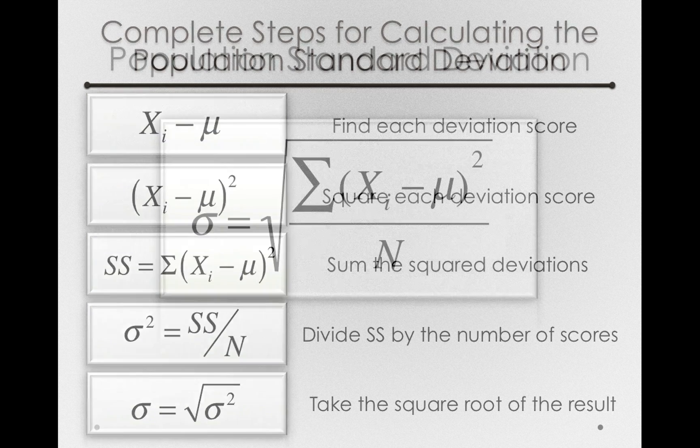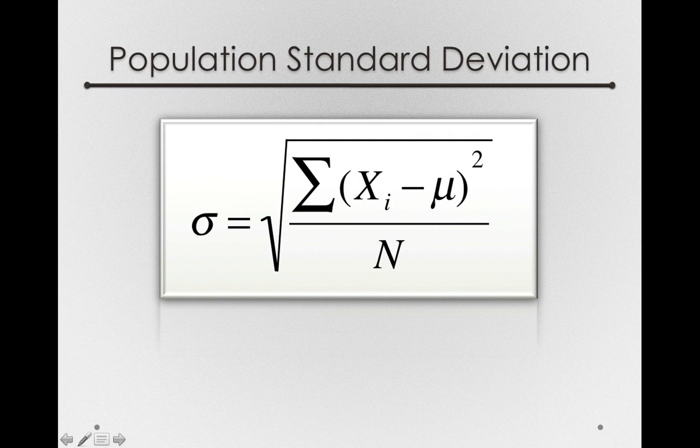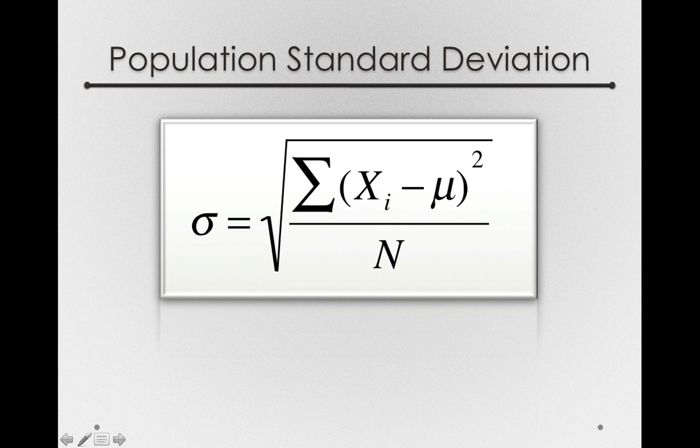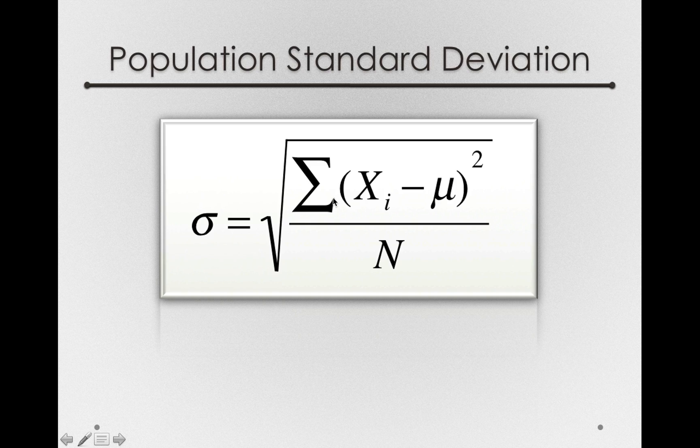Now if we put these all into one formula, we can compress down the information quite a bit. And there it is: the population standard deviation, just the square root of the sum of the squares—so each squared deviation summed—divided by the population size.